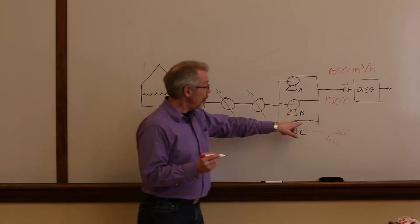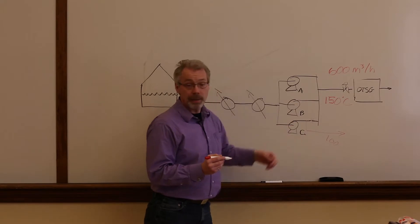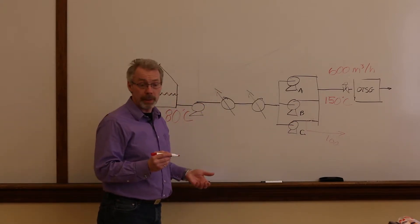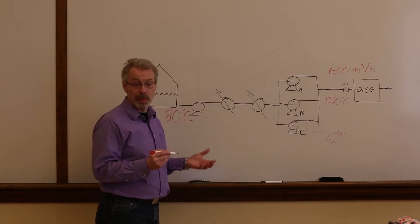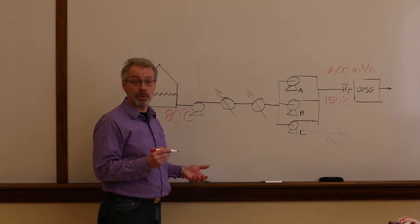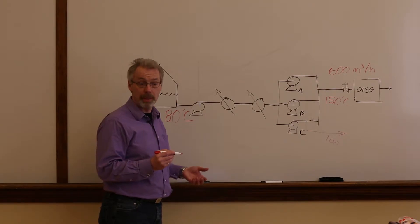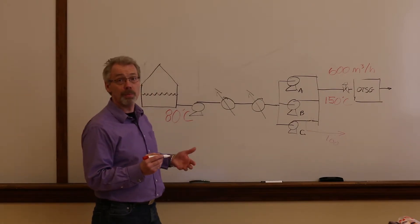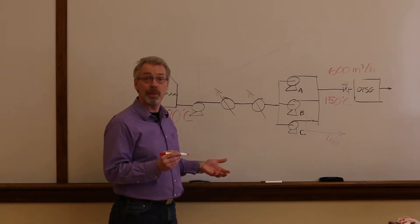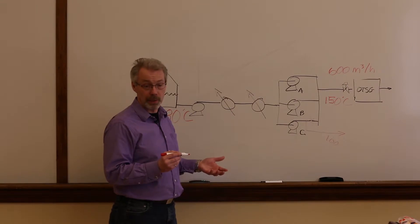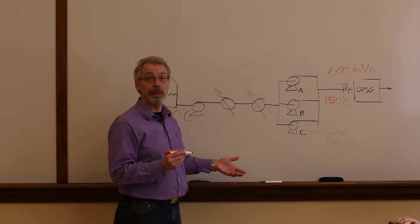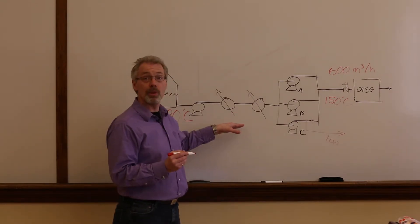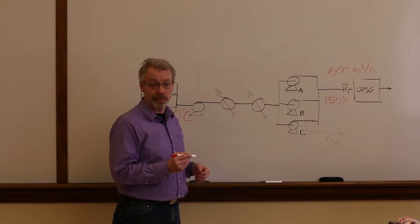Then, the pump is gradually cut into the header. The flow rate through the pump gradually increases and the minimum flow control is no longer needed. The total flow rate through all of the pumps drops to 600 cubic metres an hour, and we are back to the water gaining 70 degrees across the heat recovery section.